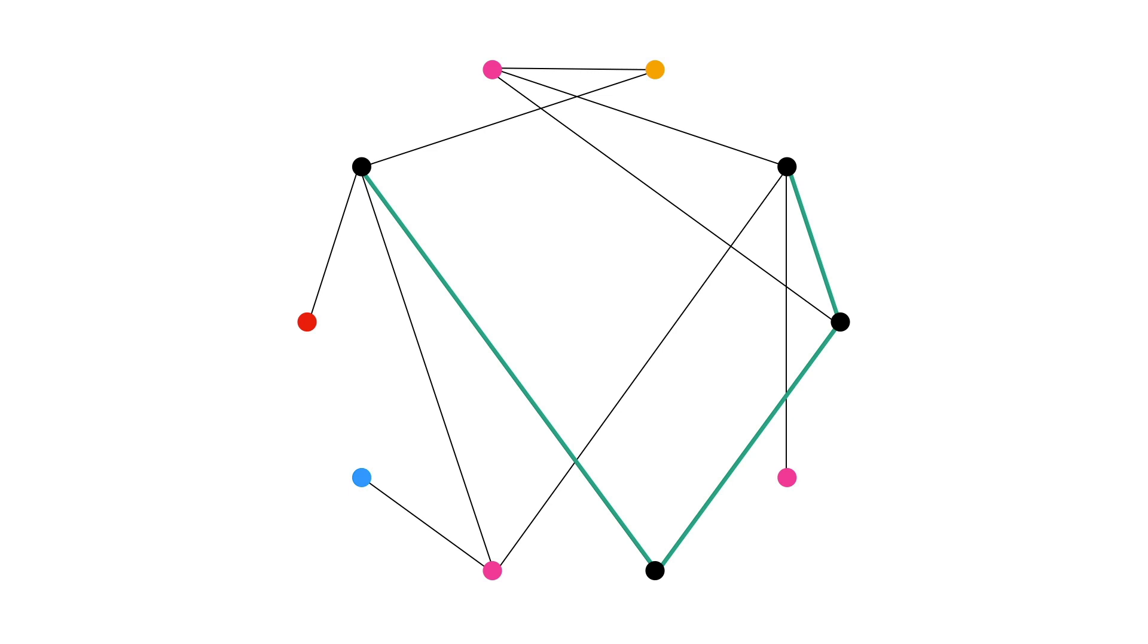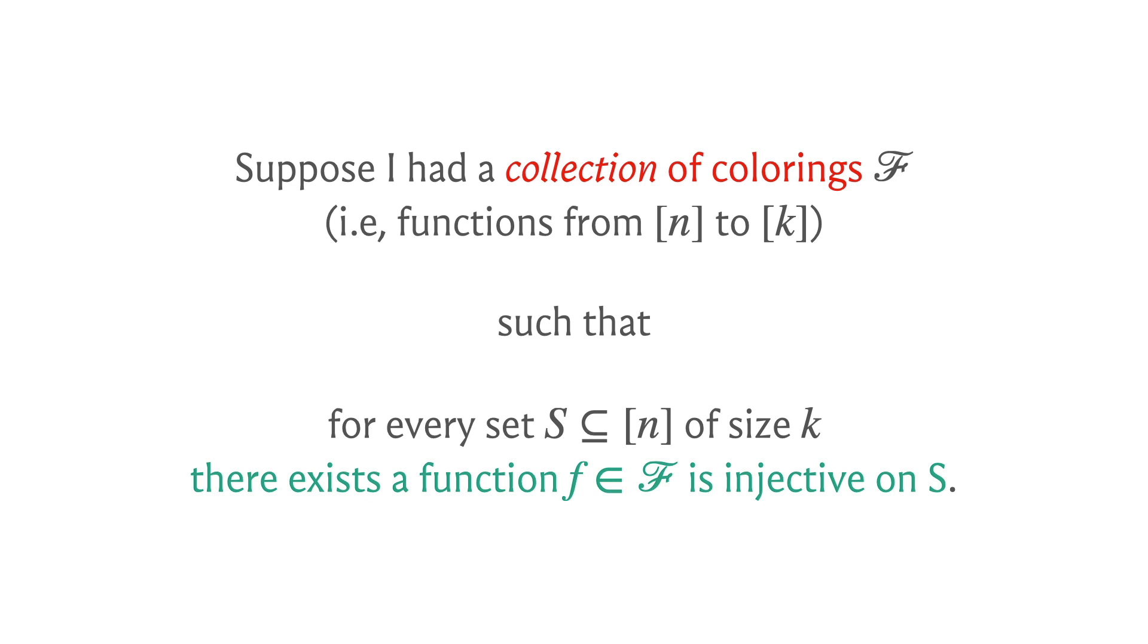One, of course, is that the collection should not be too large—it should be a manageably sized collection. The second thing is that, well, we don't know where the path is going to be; it could be any subset of k vertices. Therefore, what we want is that for every subset of k vertices there must be some coloring in our collection that takes ownership of that subset.